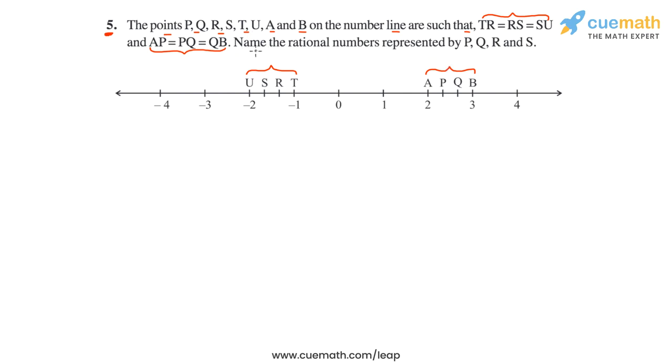Now, based on this information, we have to name the rational numbers represented by P, Q, R, and S.